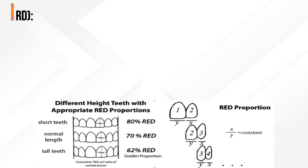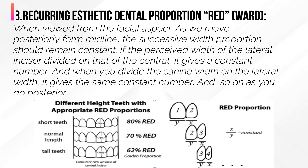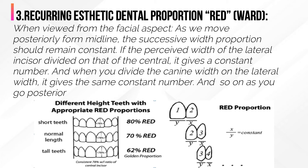The last one is the recurring aesthetic dental proportion, known as RED. When viewed from the facial aspect, as we move posteriorly from the midline, the successive width proportion should remain constant. This means that if the perceived width of the lateral incisor is divided by that of the central incisor, it gives a constant number, and when you divide the canine width by the lateral width, it gives the same constant number, and so on as you go posteriorly.